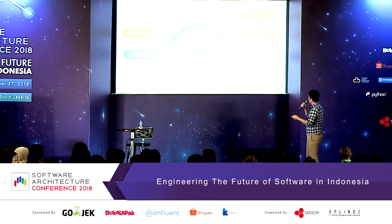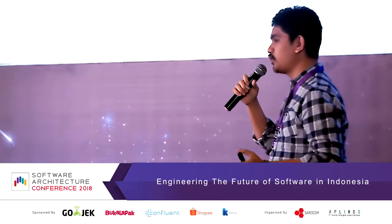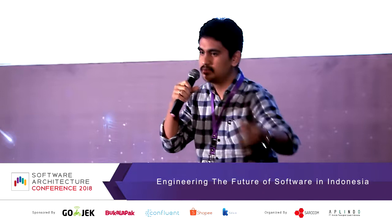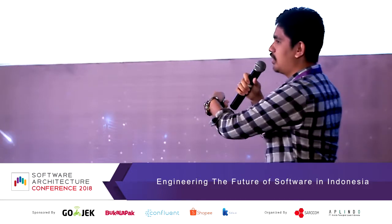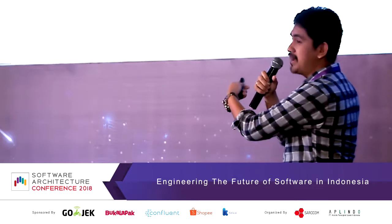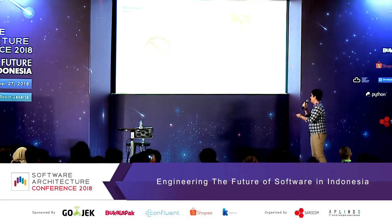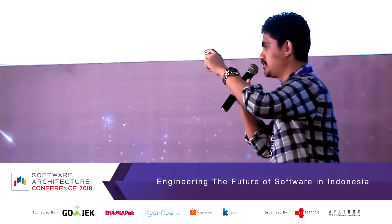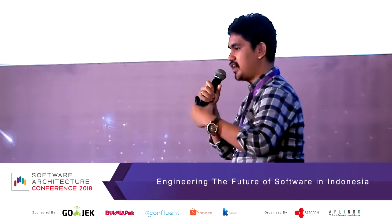BRI is a bank, so there are things we need to comply with — we cannot just build sophisticated IT tools without adhering to regulation. Our main concern is complying with regulation from OJK. One critical constraint is that we cannot easily deploy our services on the cloud, and even worse, we cannot deploy geographically outside Indonesia. So we need to manage everything fully within our on-premise systems.